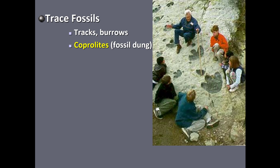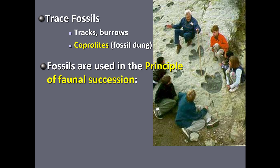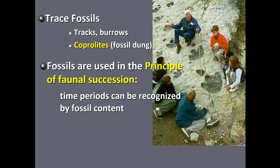Fossils are really important in a principle of relative dating called faunal succession, sometimes called fossil succession. The idea is that you can figure out the age of a rock based on its fossil content. For example, if you find a rock layer with a dinosaur fossil, that rock was deposited when dinosaurs were alive — roughly 250 million to 65 million years ago. If you can identify the specific dinosaur species, you can narrow that range even further.